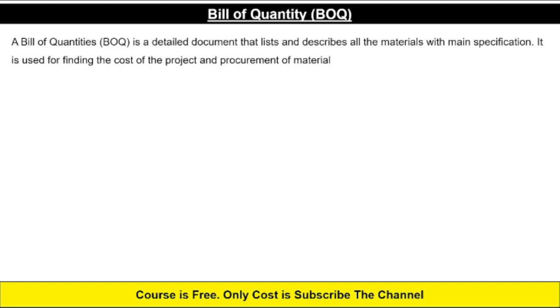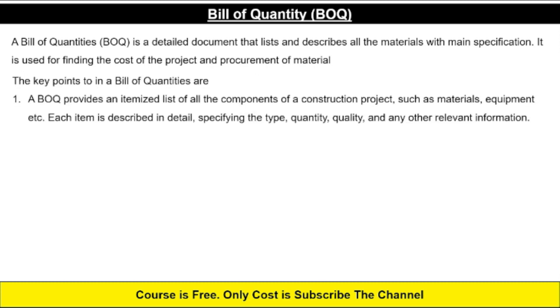Now we will see the bill of quantity — what it means and what the key points are. A bill of quantity is a detailed document that lists and describes all the materials with main specifications and conditions. It is used for finding the cost of a project and for procurement of material. The key points in a bill of quantity are as follows.